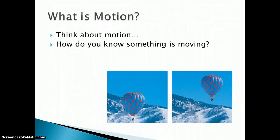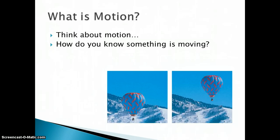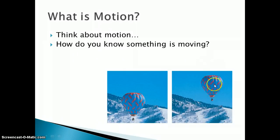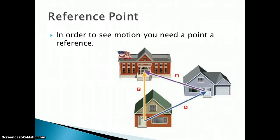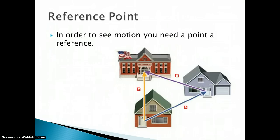When we start to talk about motion, we need to think about it — how do we really know something is moving? In the picture down there, you see the hot air balloon, and you see that the background has kind of stayed the same, but we notice that the hot air balloon has moved. We notice that it's moving because of that background, because we have a reference point. A reference point is needed in order for us to know that there was a motion that occurred. We need to have a point of reference that's usually stationary so that we can see the motion occurring.